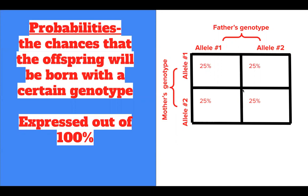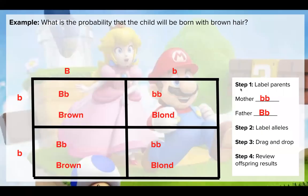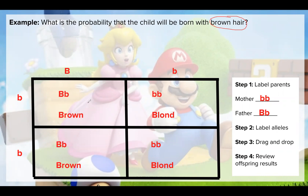Let's do an example that applies this to a real concept. Here is the example from the last video with Princess Peach and Mario, except this time we're asked: what is the probability that the child will be born with brown hair? We need to look at all of the potential genotypes for our offspring and count how many have brown hair.